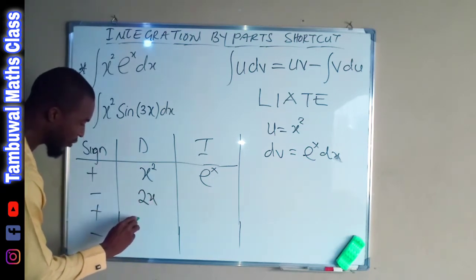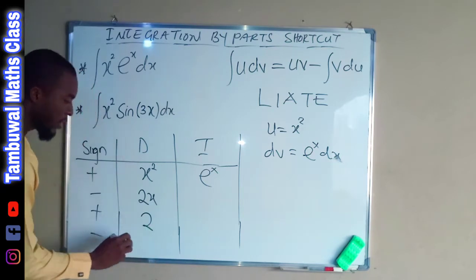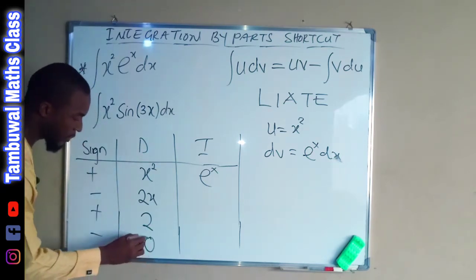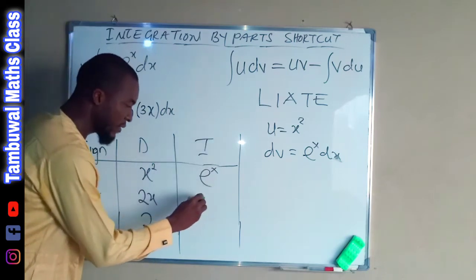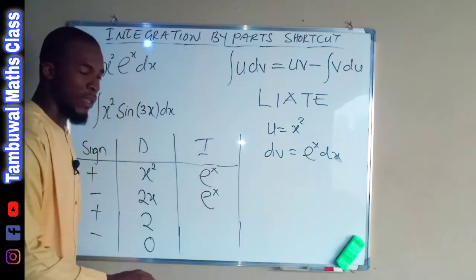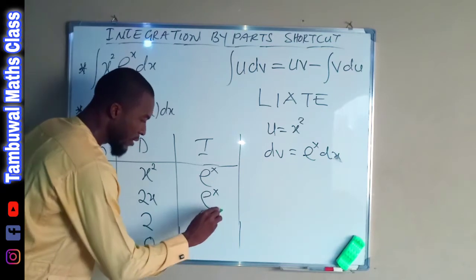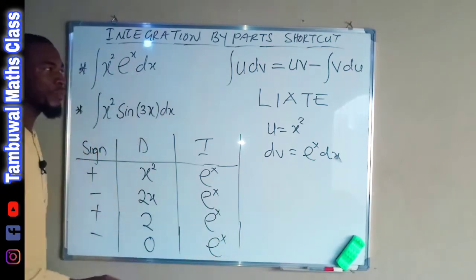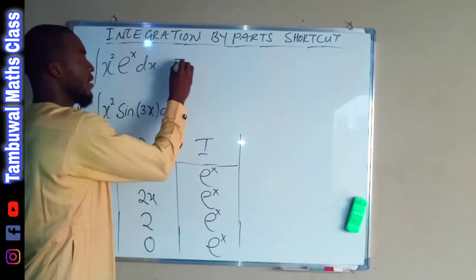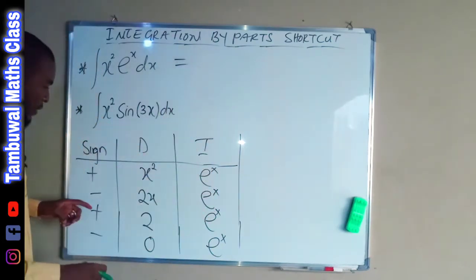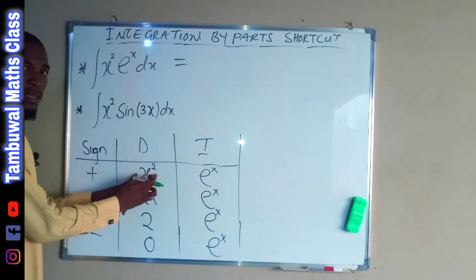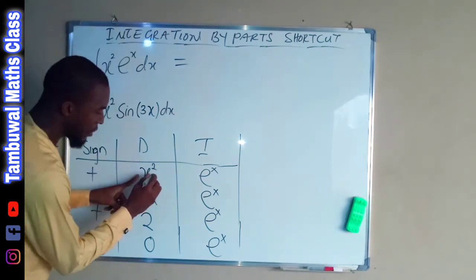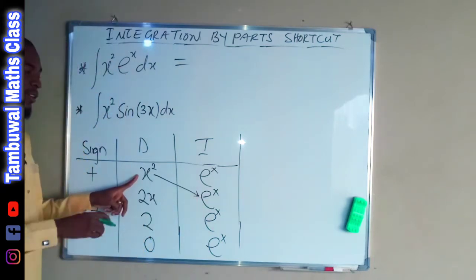The next derivative of 2x is 2, and the derivative of a constant is zero. Then we integrate the exponential x column: integrating exponential x gives exponential x, integrating again gives exponential x, and once more gives exponential x. So finally, the positive row gives x squared multiplied by exponential x.